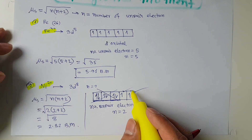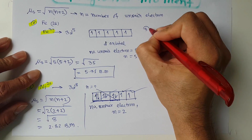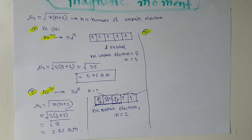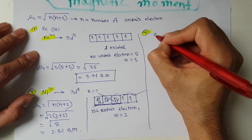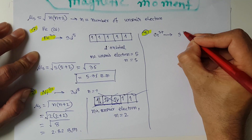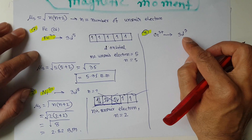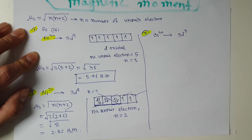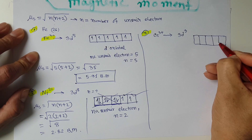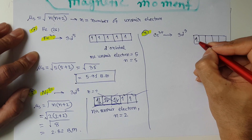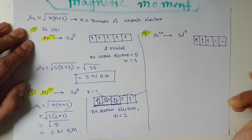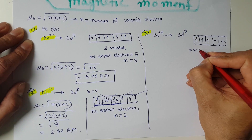For the third example, consider chromium Cr³⁺. Using Hund's rules, the outermost orbital is 3d³ — meaning the d-orbital is occupied by 3 electrons. The d-orbital is subdivided into 5 subshells. Filling one electron into each: first subshell, second subshell, third subshell — the remaining two subshells are empty. So the number of unpaired electrons n = 3.